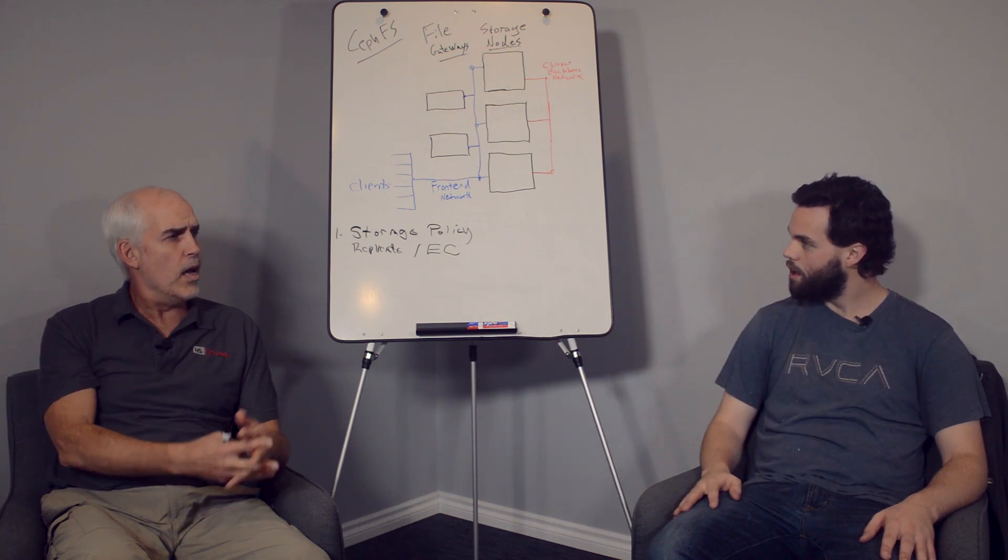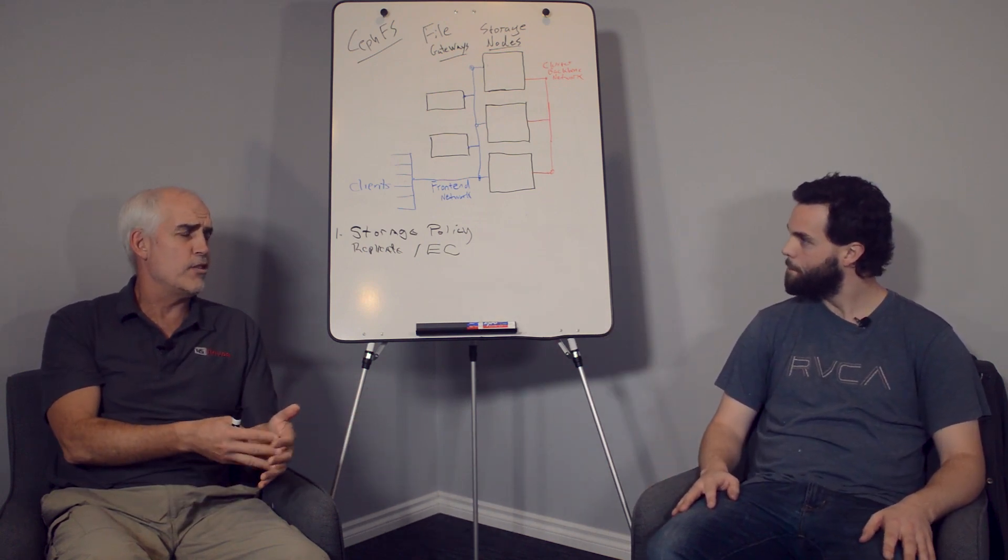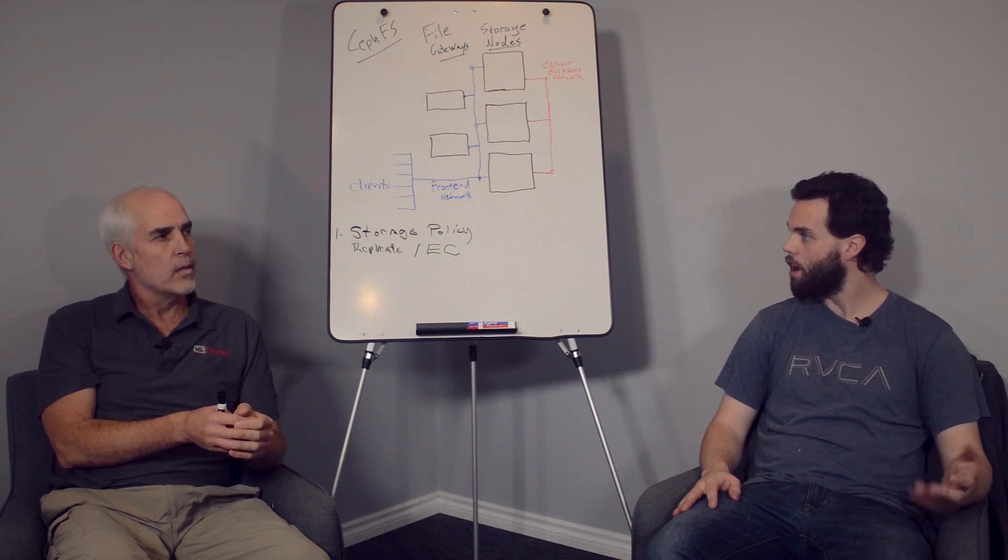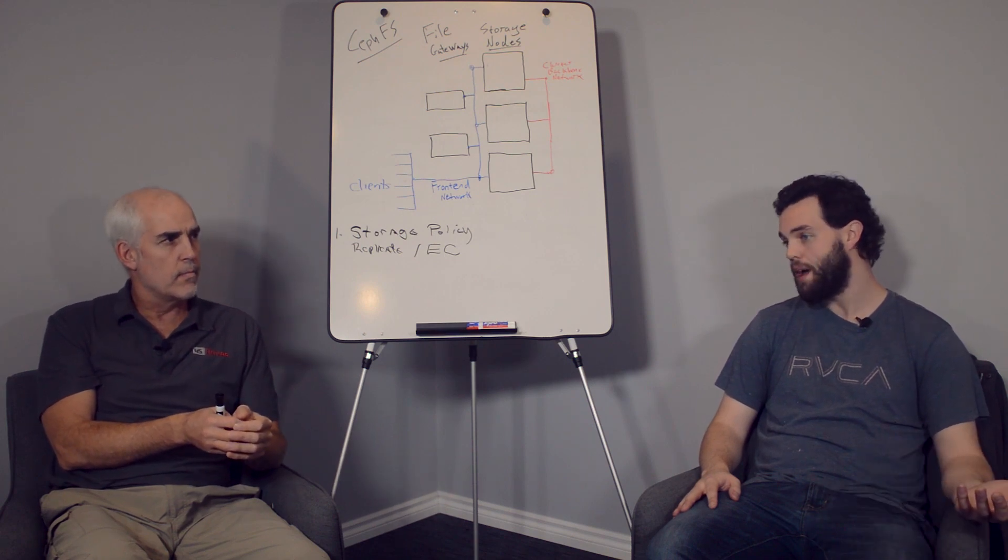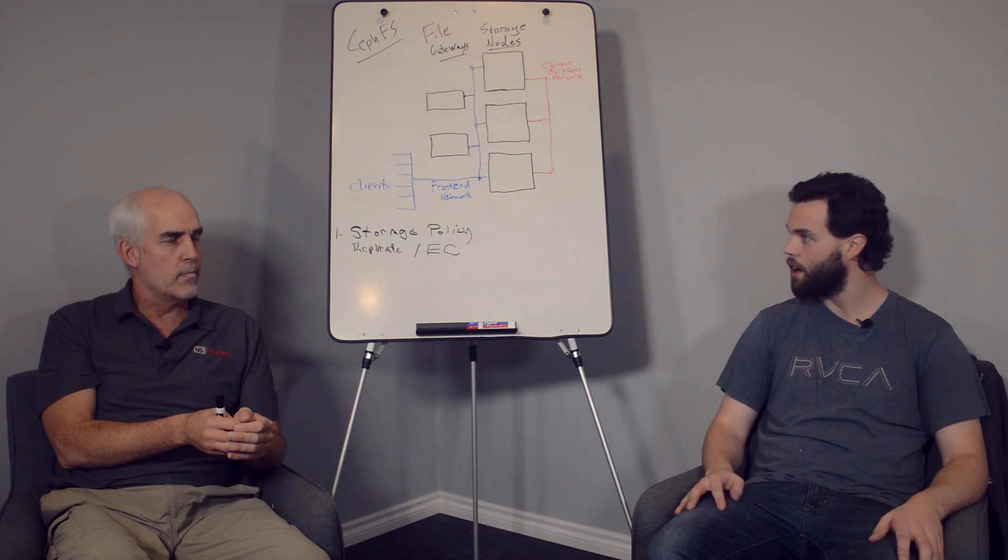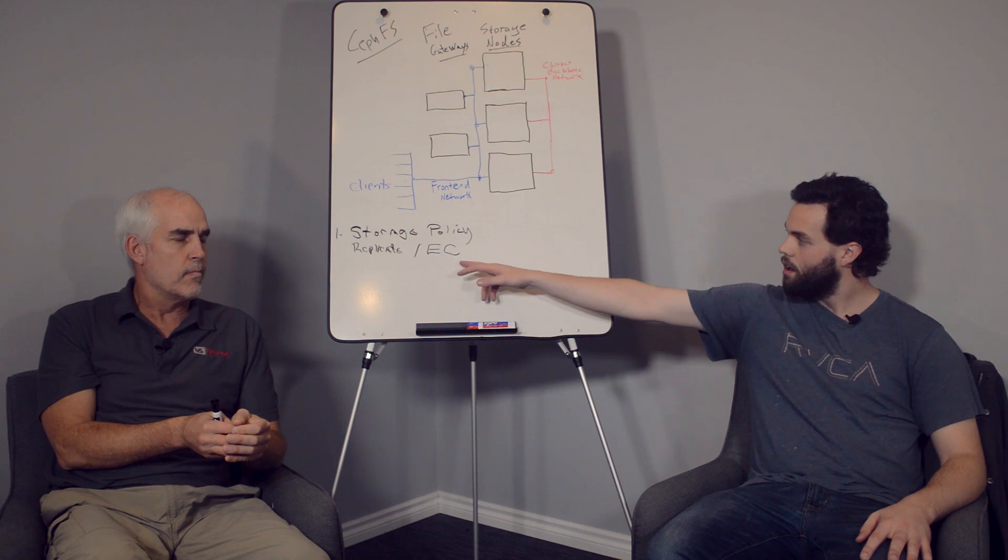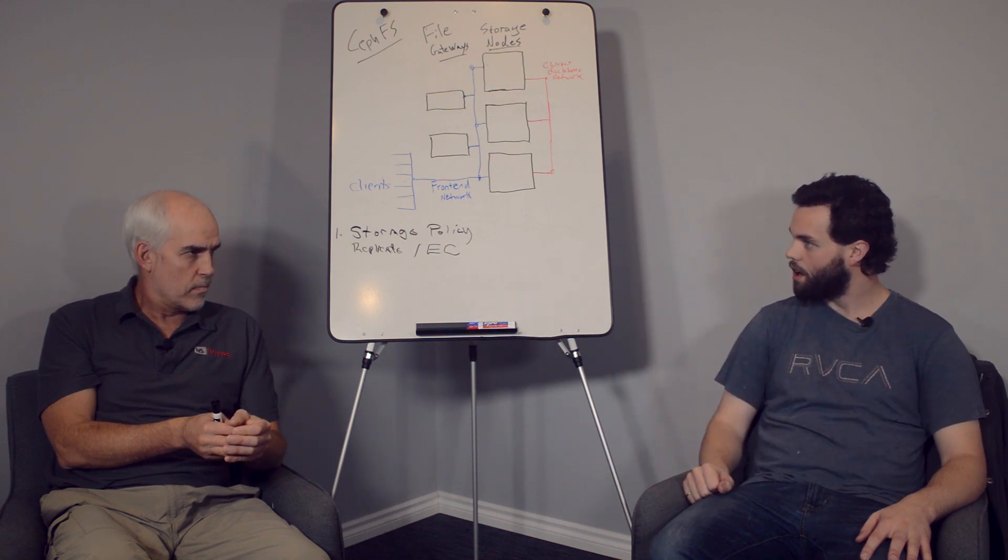Erasure code. And the downside of replicate is just storage efficiency, right? That's it. If you want three copies of your data and you need a petabyte of usable data, you need to buy three petabytes worth of data. So that's where erasure code comes in, our other friend here.